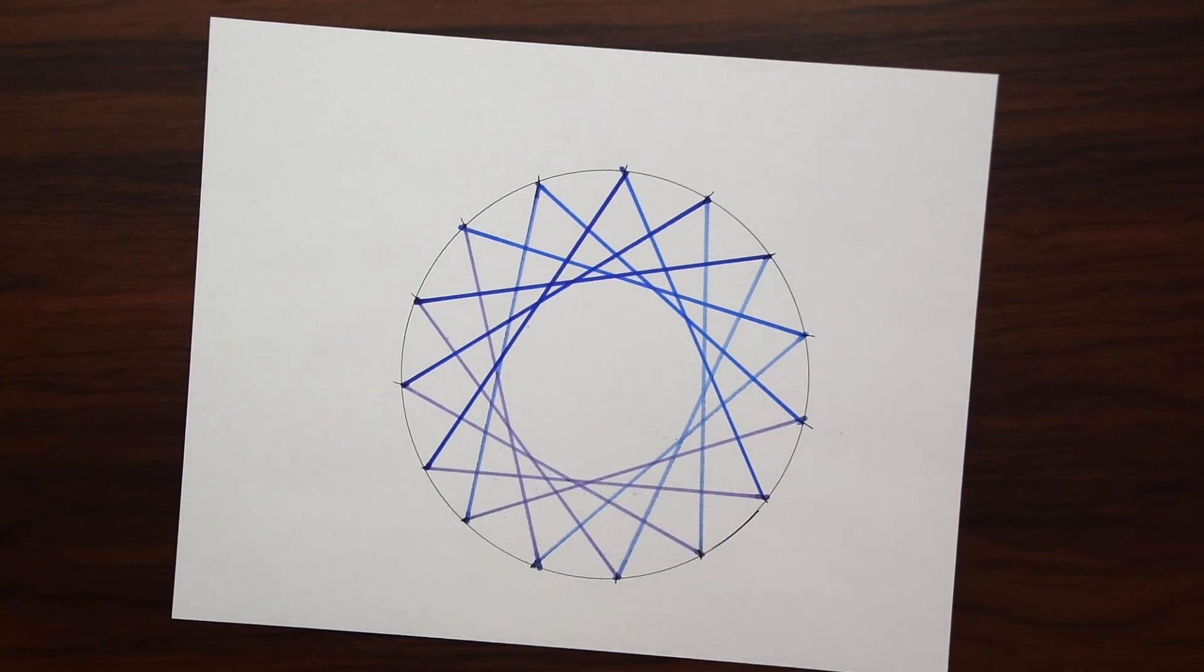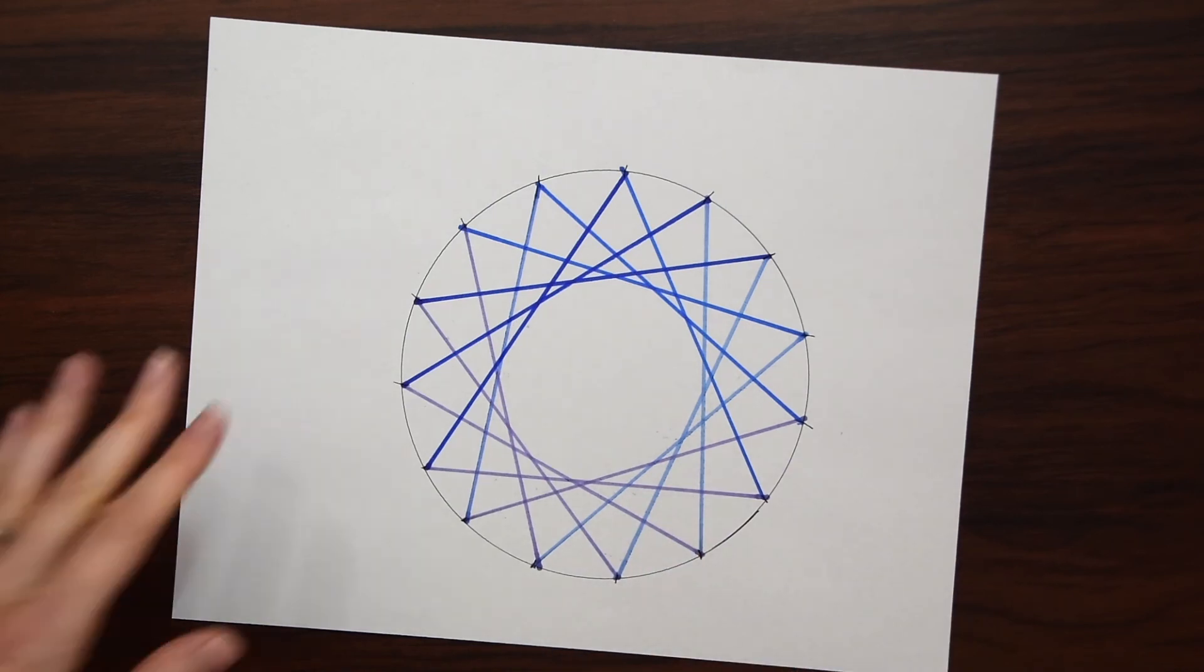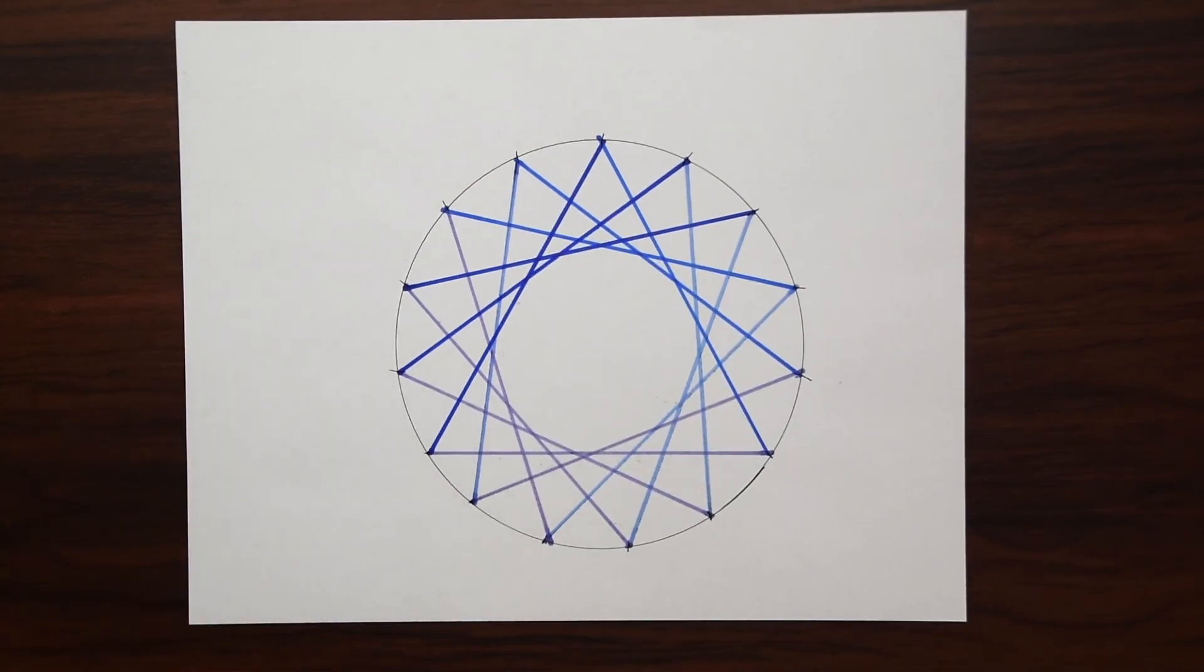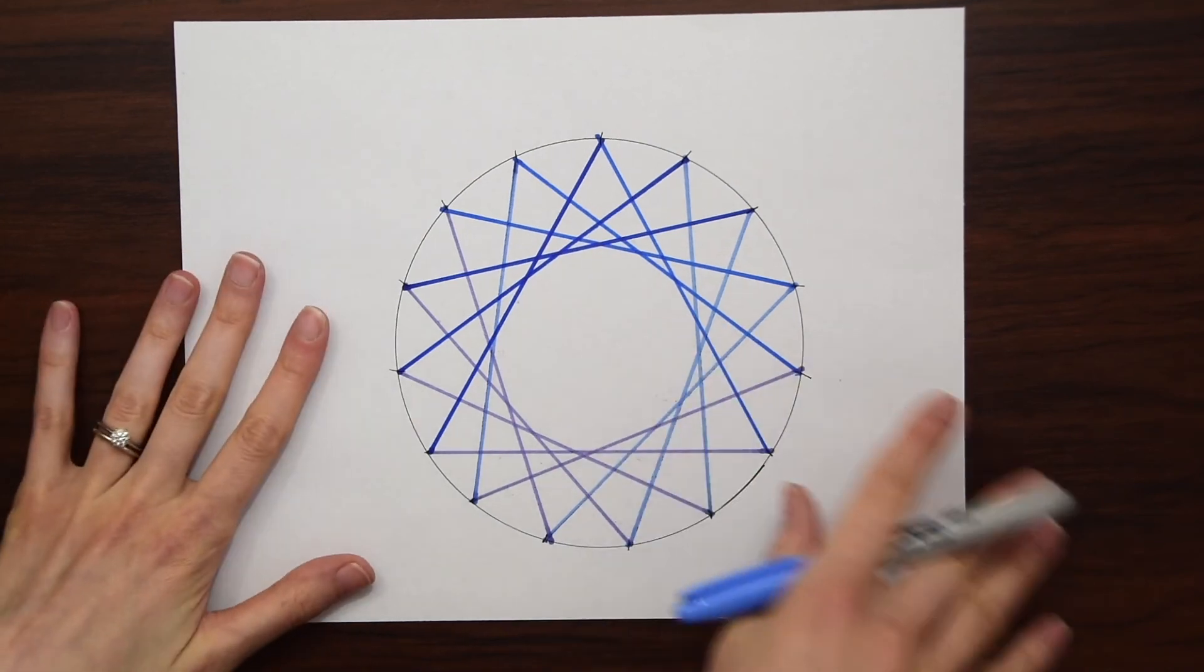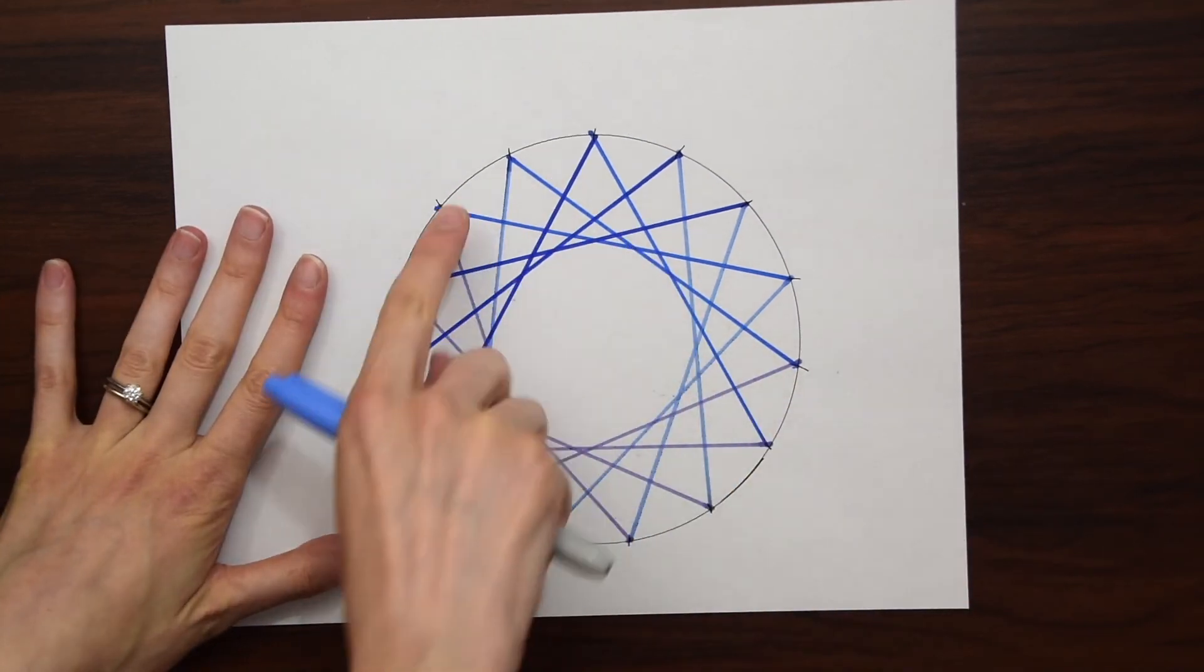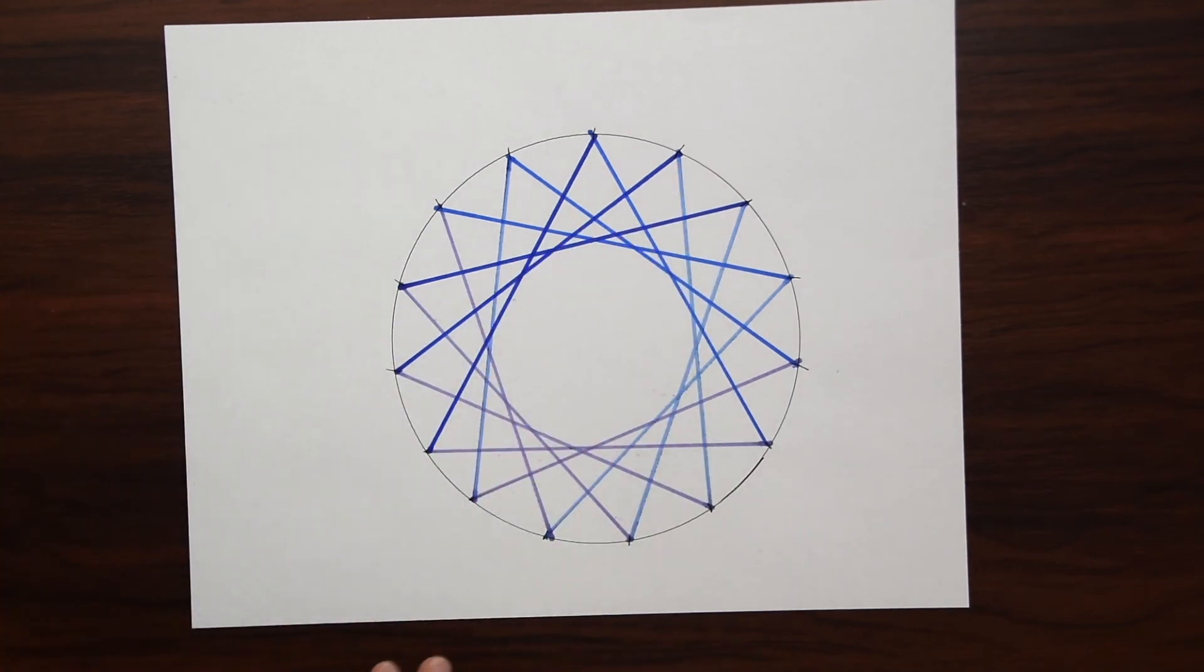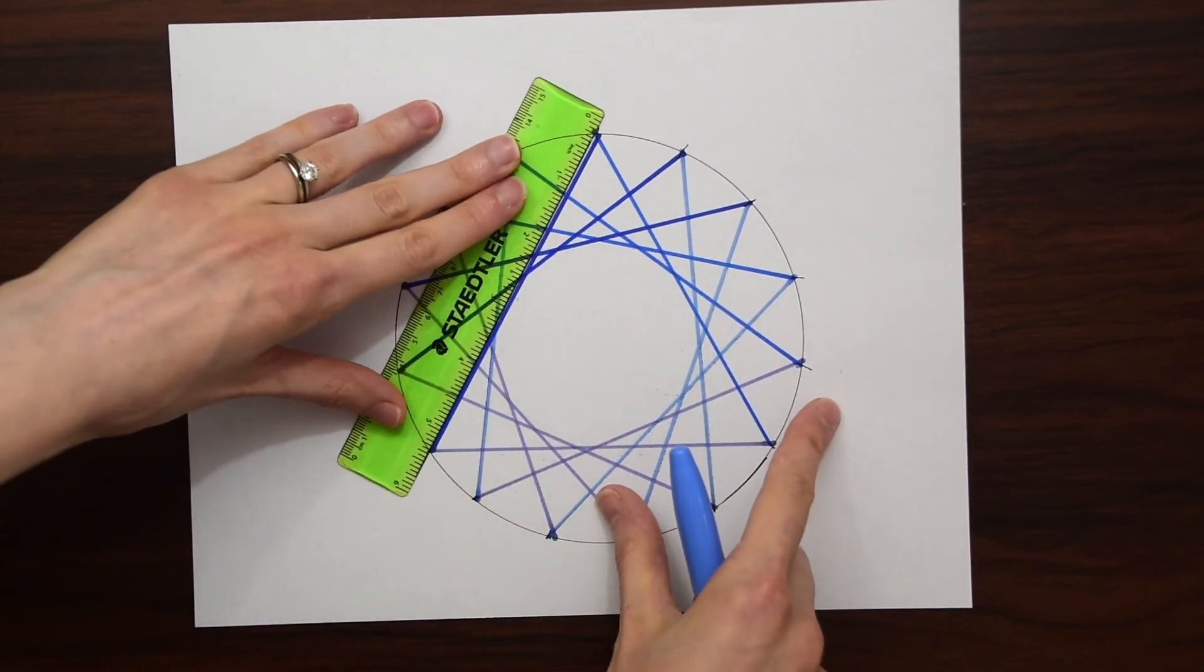And there we have our original spirograph. We can play around with different sized circles and different sized points on the circle, and connecting different points, and you will have all different kinds of shapes and creations.